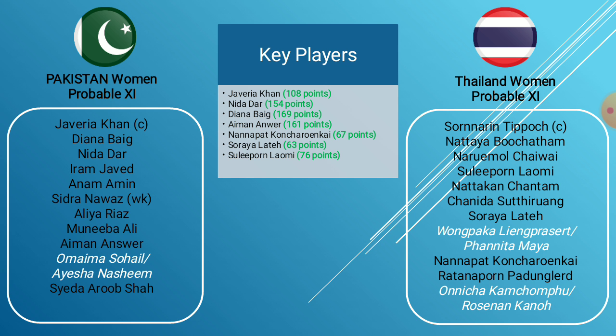Nidadari is a key all-rounder for Pakistan who bowls well and contributes with the bat. She has taken 5 wickets in 3 matches with a couple in each game, and although she hasn't contributed much with the bat, she will be keen to correct that against Thailand. Diana Beg was probably the best bowler of the day against South Africa, taking 2 wickets and conceding just 19 runs in 4 overs including a maiden — she bowled well against West Indies and England too with 3 wickets. Ehman Anwar has been the most consistent bowler for Pakistan, bagging 6 wickets in 3 matches including a 3-wicket haul against England, and can come good against Thailand.